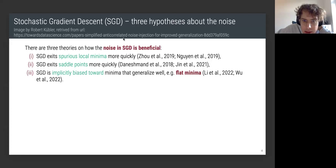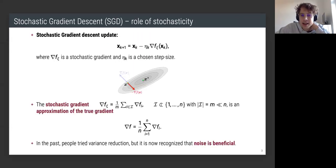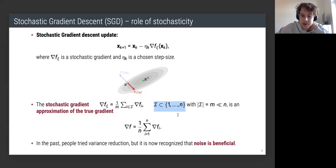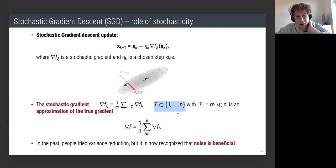A quick clarification from the chat: I mistakenly described the stochastic gradient as a subset of the parameters — it's of course a subset of the data points. Sorry, I guess I didn't have enough coffee today. Thanks for pointing that out.